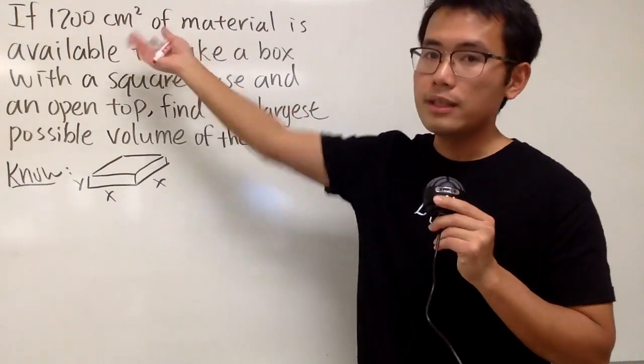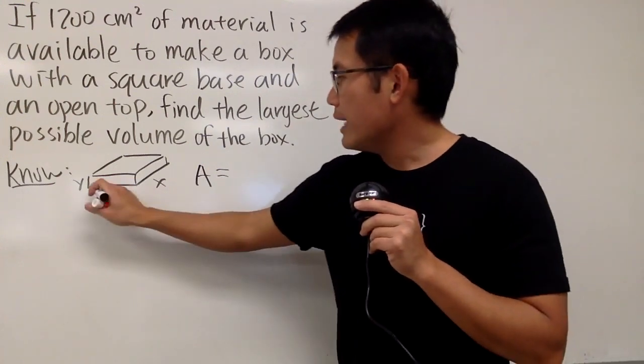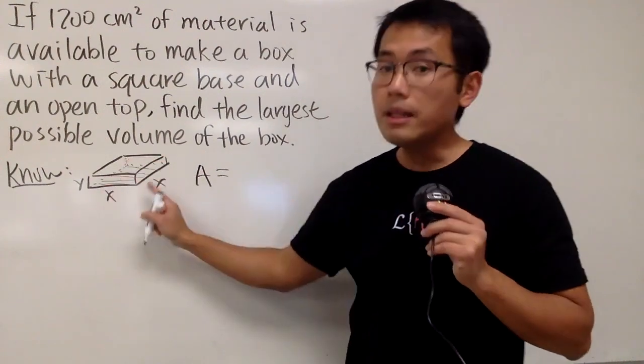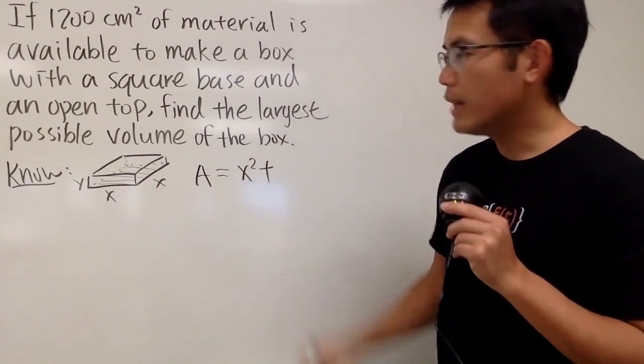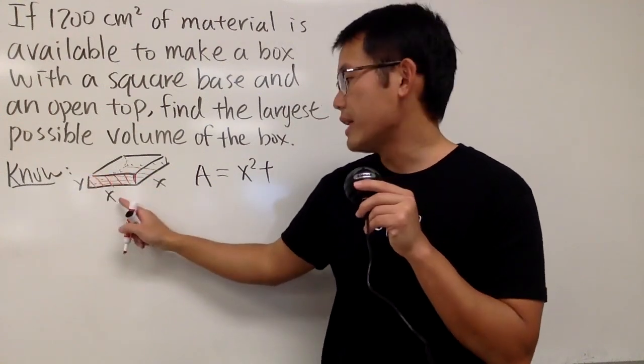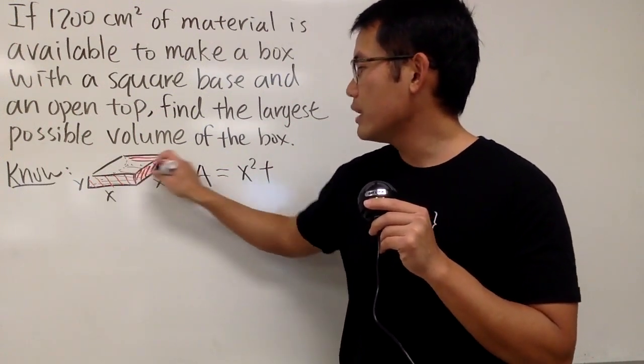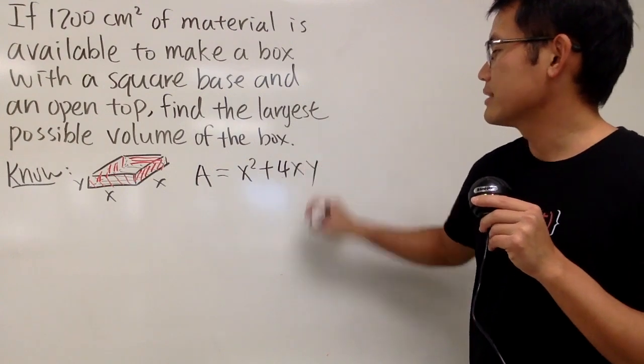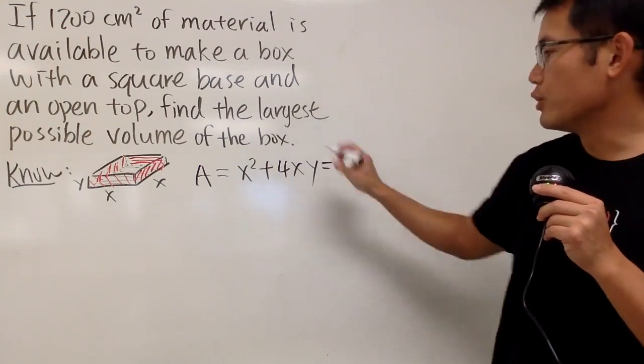First of all, the material is 1,200. So that means the surface area, I'll just put an A for that. Right here, remember, we have a square base. So let's take this into consideration first. On the bottom here, we have the area x times x. So that's x squared. And then we have to add, if you look at the side right here, for this part, it's just a rectangle. And the area is x times y. And the truth is, we actually have four of them. So another one here, another one in the back, and another one on this side. So we have to add four times x, y, like this. And this time we know the surface area is going to be 1,200.